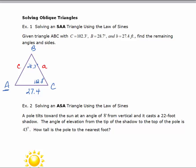Since I know that the sum of the angles in a triangle equals 180 degrees, it's easy to find A first. So A would equal 180 degrees minus 28.7 minus 102.3. So A equals 49 degrees.